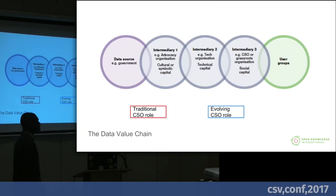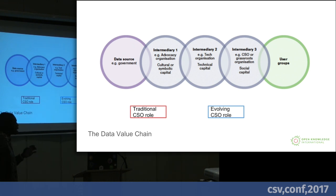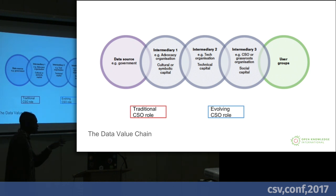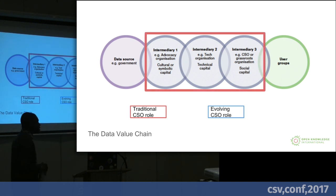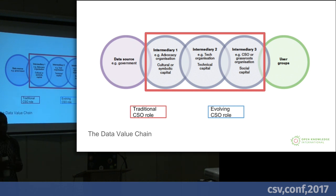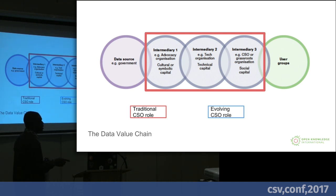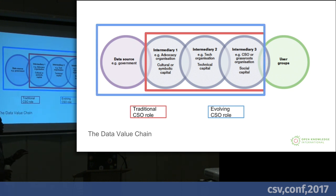When I joined the open data movement, this was a typical value chain I heard about: there's somebody who produces data — typically the government — and then there are intermediaries who work with this data and get it to user groups like citizens. The intermediaries tended to be civil society organizations who were not necessarily data producers, working with this data to turn it into insights for advocacy. But this is actually evolving, particularly in low-income areas, where civil society organizations are moving to a data production role.